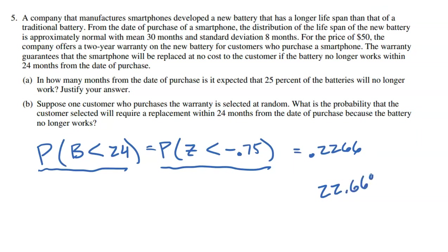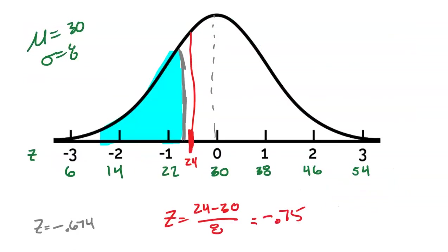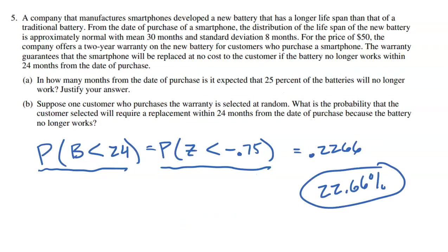So there's about a 22.66% probability that somebody is going to require a brand new phone because their battery lasted less than 24 months. What we just found is that less than 24 months corresponds to a Z-score of negative 0.75, representing about 22%. If you're using a normal table instead of a calculator, you'd look up the negative 0.75 Z-score and cross-reference the first and second digits to get that 0.2266.